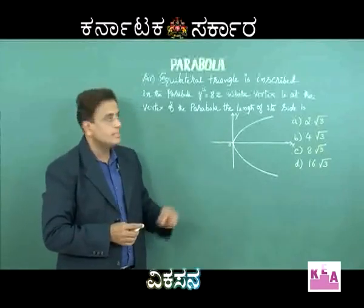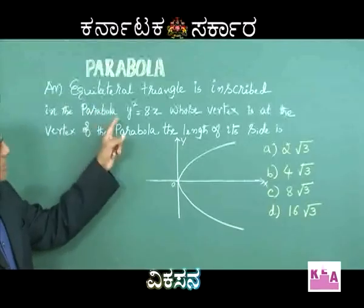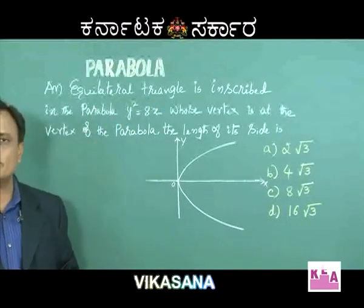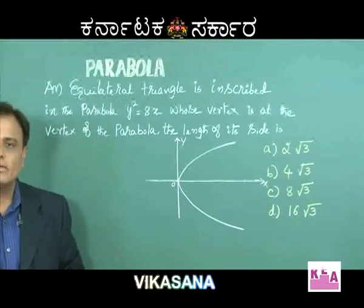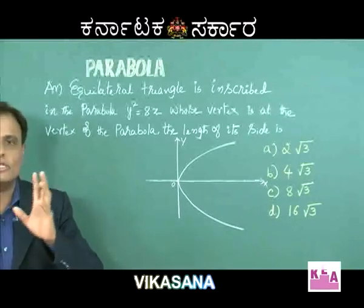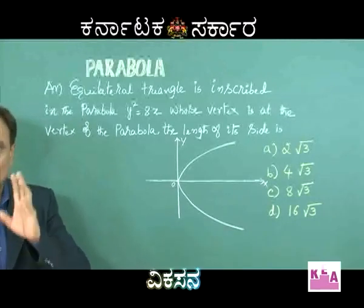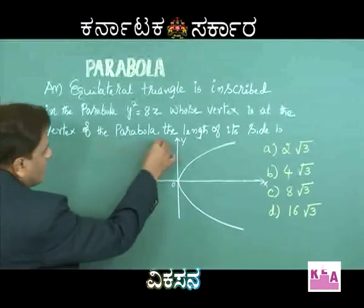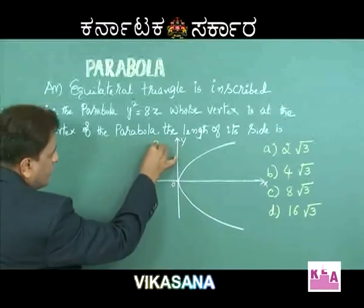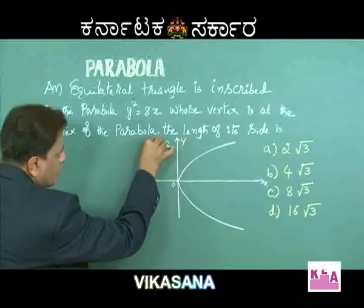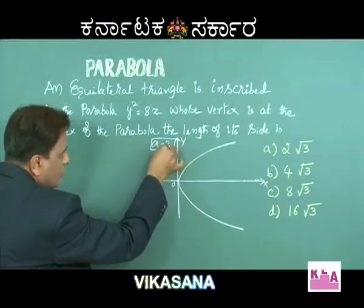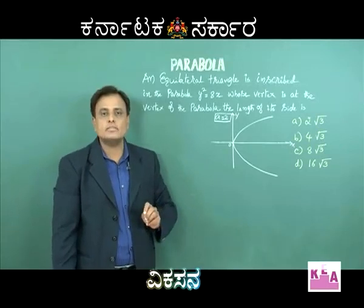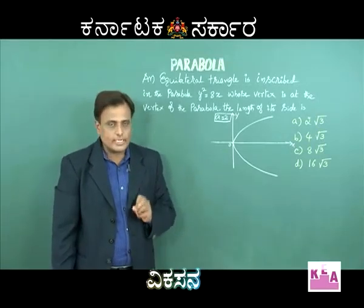Consider the equation of the parabola y² = 8x. This is in the form y² = 4ax, so 4a = 8 and a = 2. We now know the value of a = 2, since the given parabola is y² = 8x.